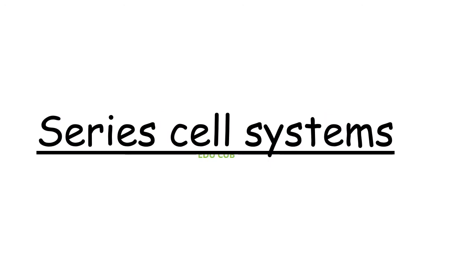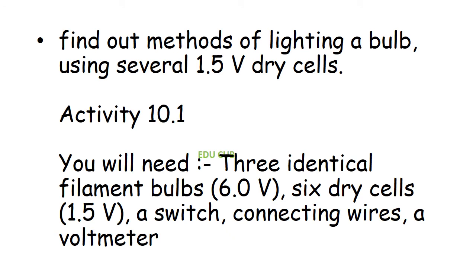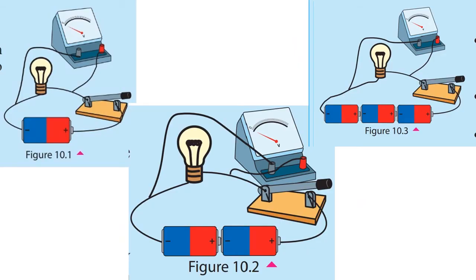Now we have to find out how to make an electric circuit using various electric components and how they work. Our first subtopic is various methods of connecting cells and bulbs. The first method is the series cell system. In this activity we will need three identical filament bulbs, six dry cells, a switch, connecting wires, and a voltmeter.